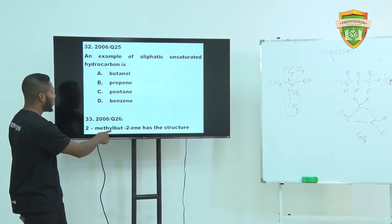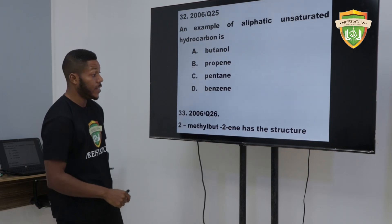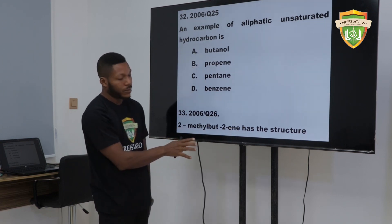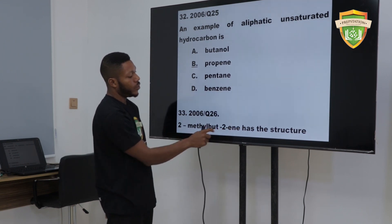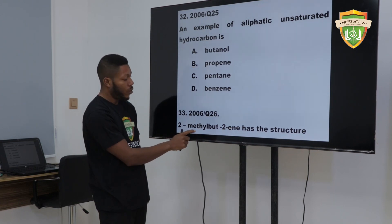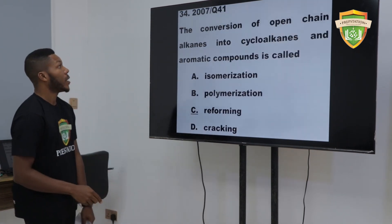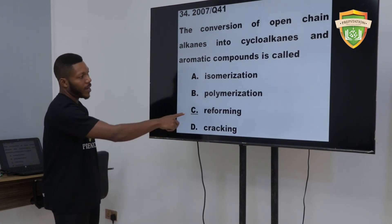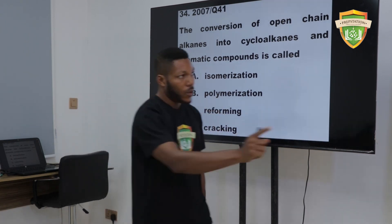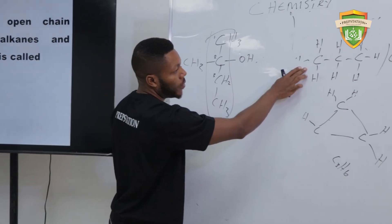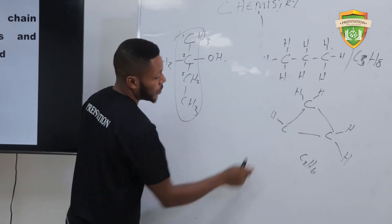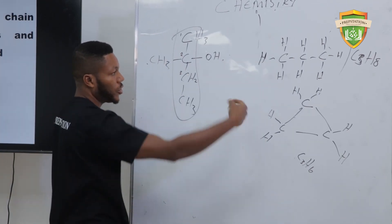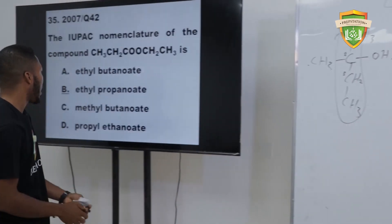Two-methyl-2-butyne has a structure — that is your assignment. Draw the structure of butyne, then attach one methyl group to carbon two. You get your answer. The conversion of open-chain alkanes into cycloalkanes and aromatic compounds is called reforming. We just change the structure — reform the aliphatic hydrocarbon propane into a cyclic form. This process is called reforming.